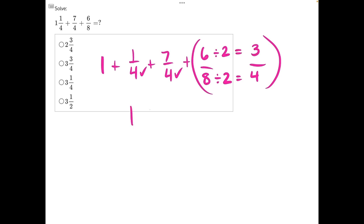Now we can rewrite this as one plus one fourth plus seven fourths plus three fourths. And when we add all of these together, one plus seven will give us eight, and eight plus three will give us 11 total. So we'll have one plus 11 over four.